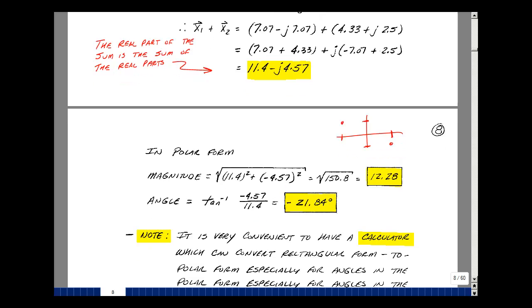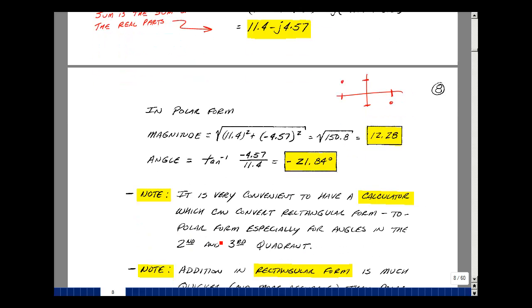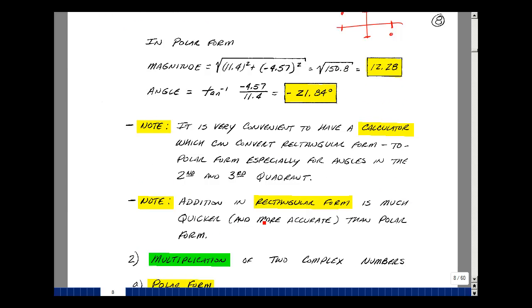If you have a calculator that can convert rectangular form to polar form and vice versa, then it'll take care of whether you're in one quadrant or another. So if you can find that type of a calculator, they're fairly inexpensive, but they're called scientific calculators. One last comment here. Addition in rectangular form is a lot easier and really more accurate than polar form because I have to do a graphical representation of my addition. Both give you the same answer. There'll be times we're doing symbolic phasors, and the polar form will be the only way we can express the results.